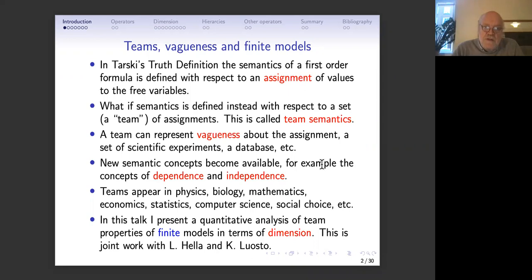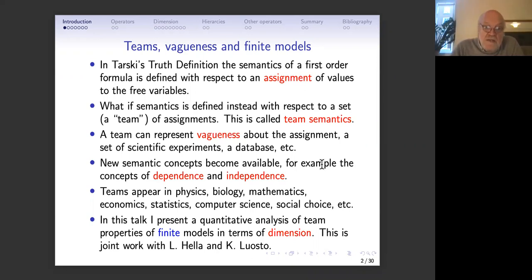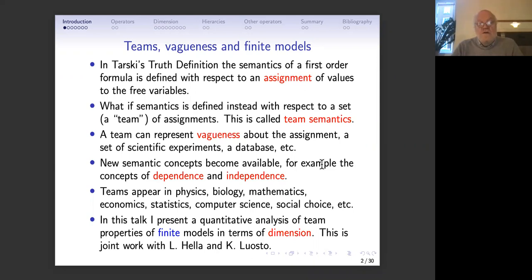A team can be interpreted in different ways. One way, especially in so-called inquisitive logic, is that it represents vagueness about one assignment which we may not know. But it may also simply represent a set of scientific experiments. If it is quantum physics, we may be Heisenbergian and think there is no truth behind this — everything we have is just the experiments. A database is also a set of assignments. This vagueness which a team represents is perhaps the closest that comes, in my talk, to many-valued logics.